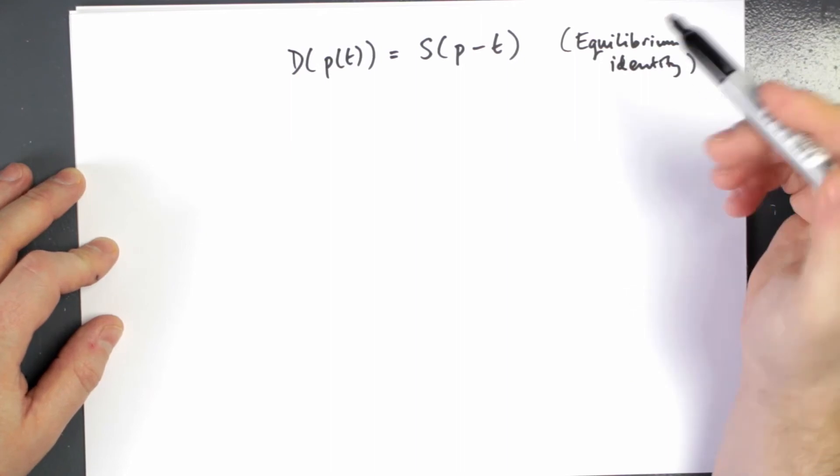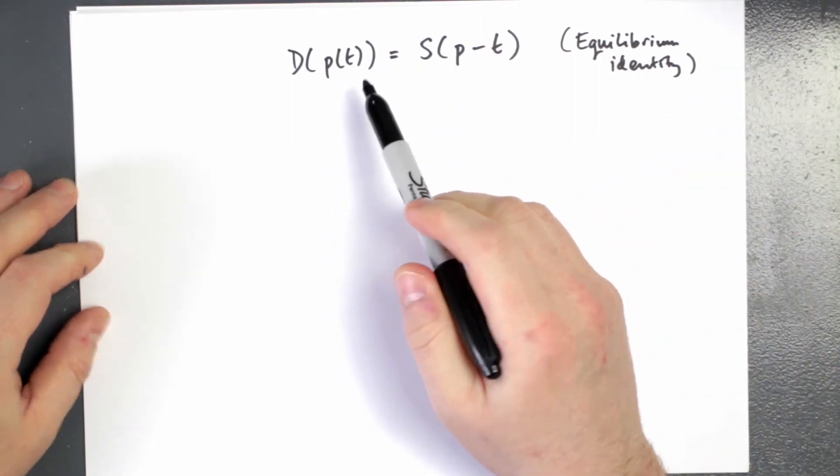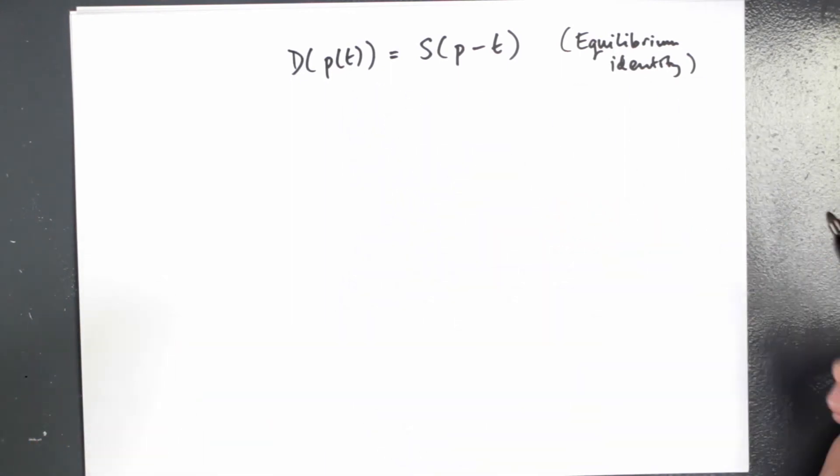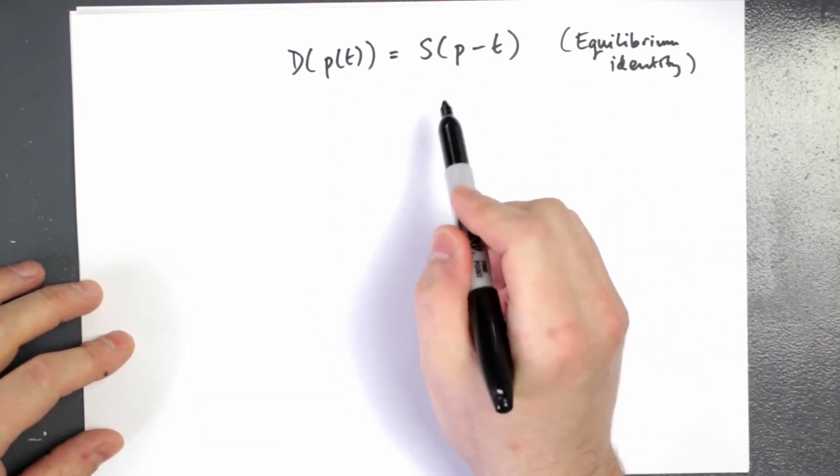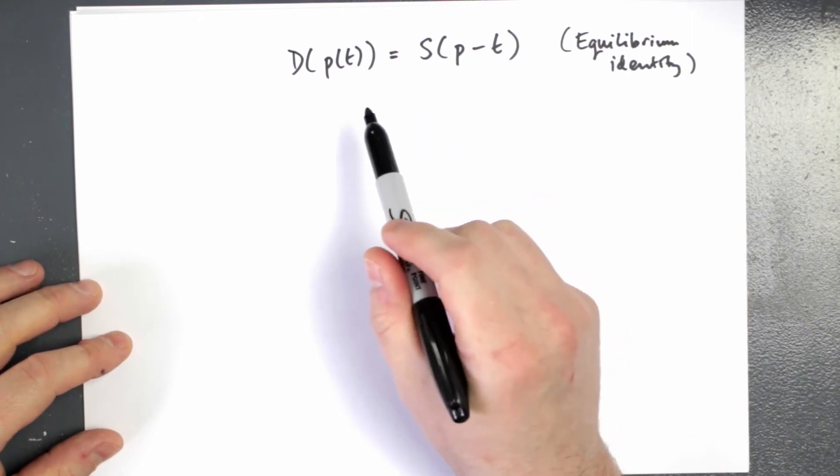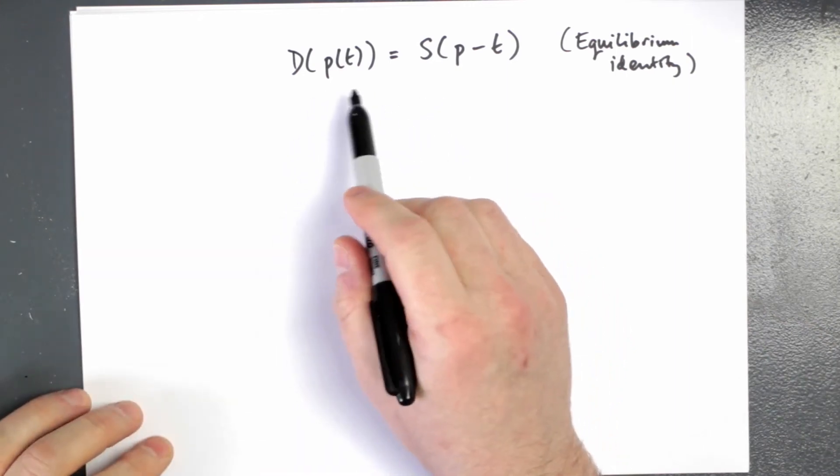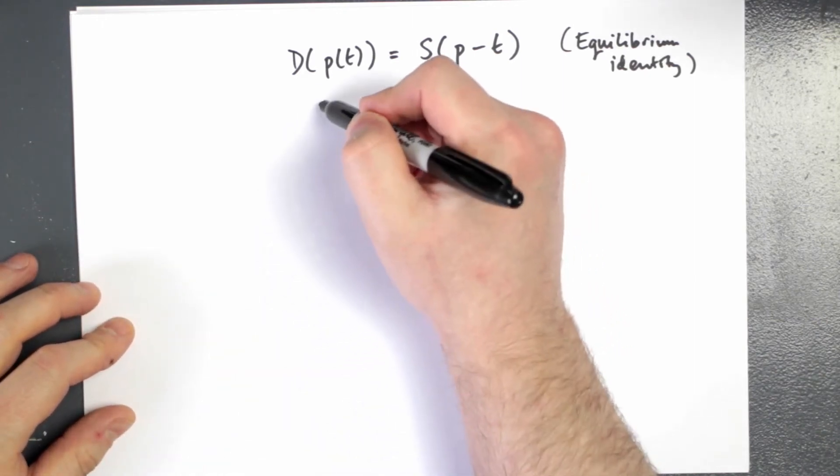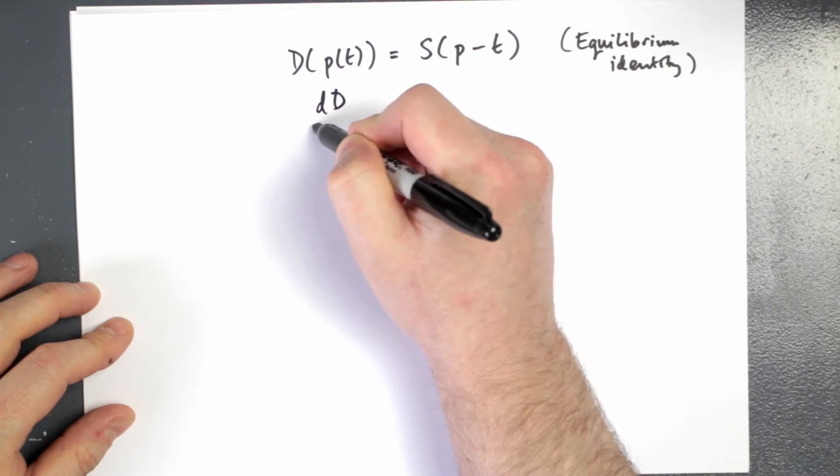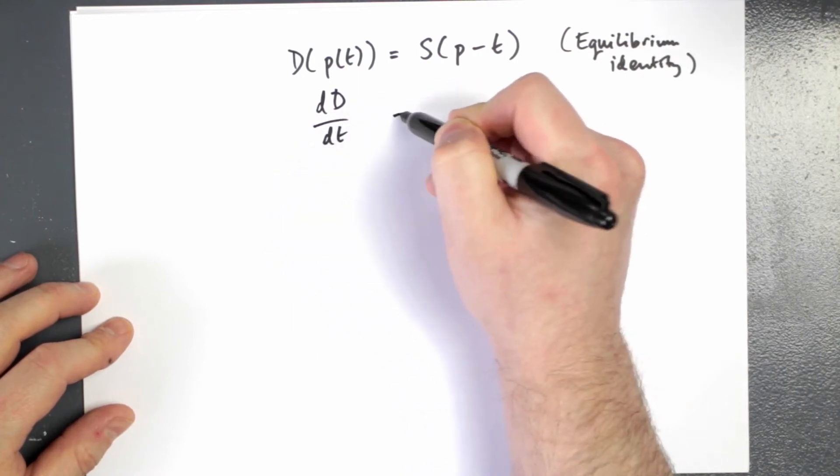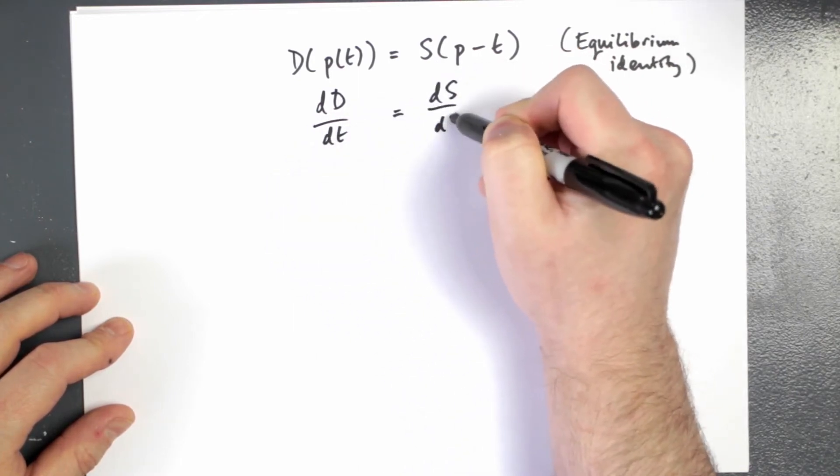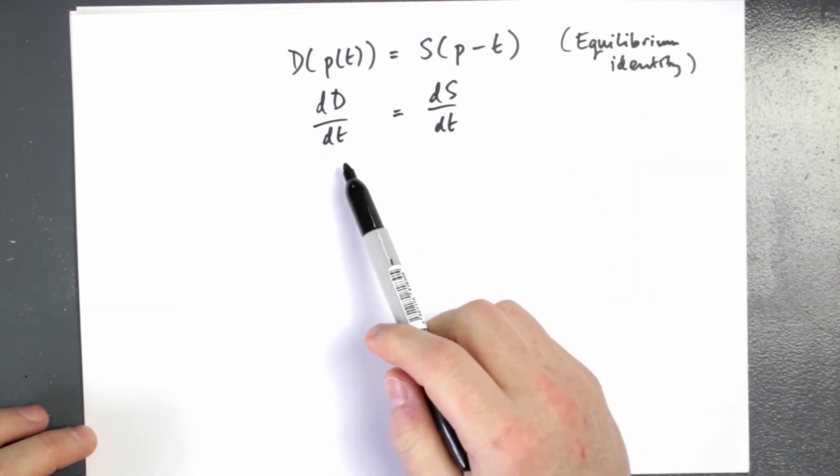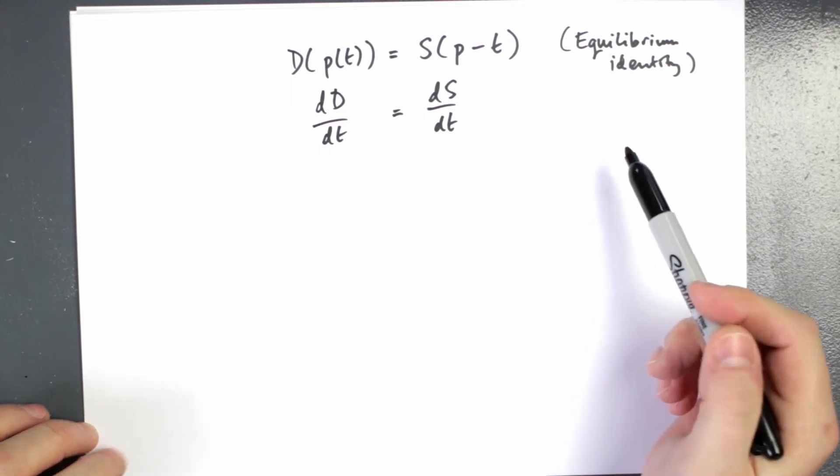So now we're treating this as an identity, like staying within the equilibrium world. We can differentiate both sides of this and it's perfectly okay to do this. So in this case, we could differentiate the demand with respect to t and the supply with respect to t. So we differentiate how does this demand change as the tax changes? How does supply change as the tax changes?